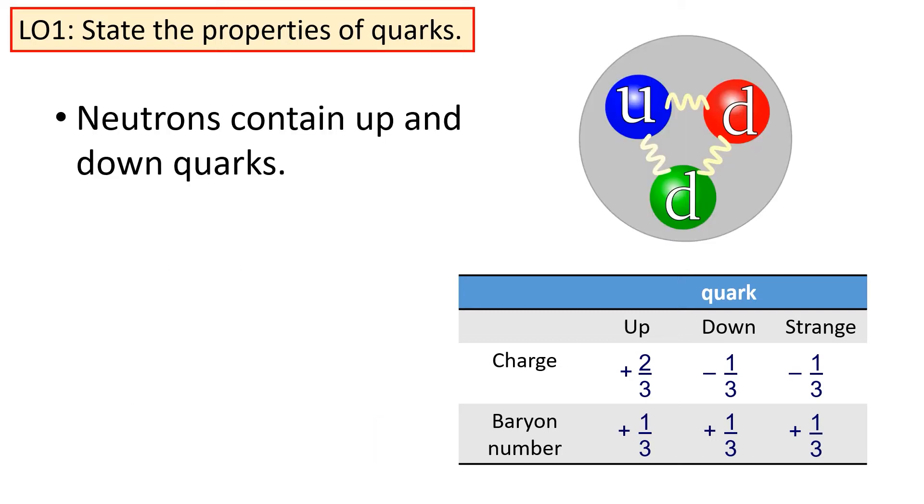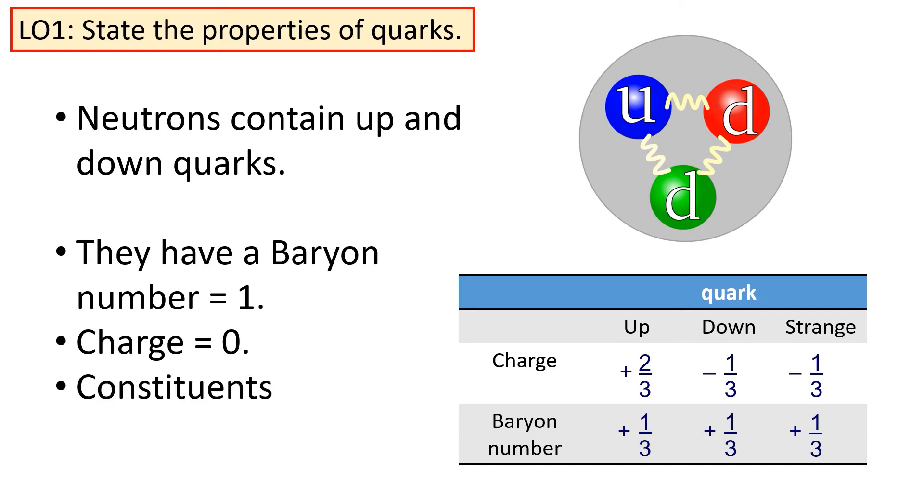Neutrons are similar to protons in that they also contain up and down quarks. The neutron should have a baryon number of plus one, and it should also have a charge of zero. Therefore, the constituents of a neutron must be up, down, down.